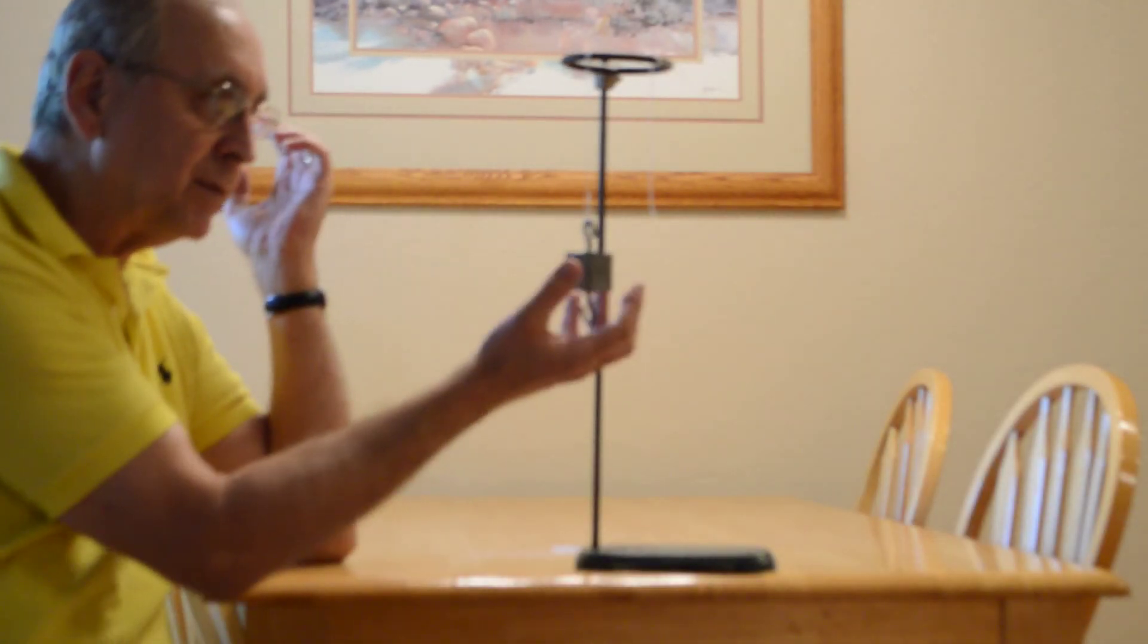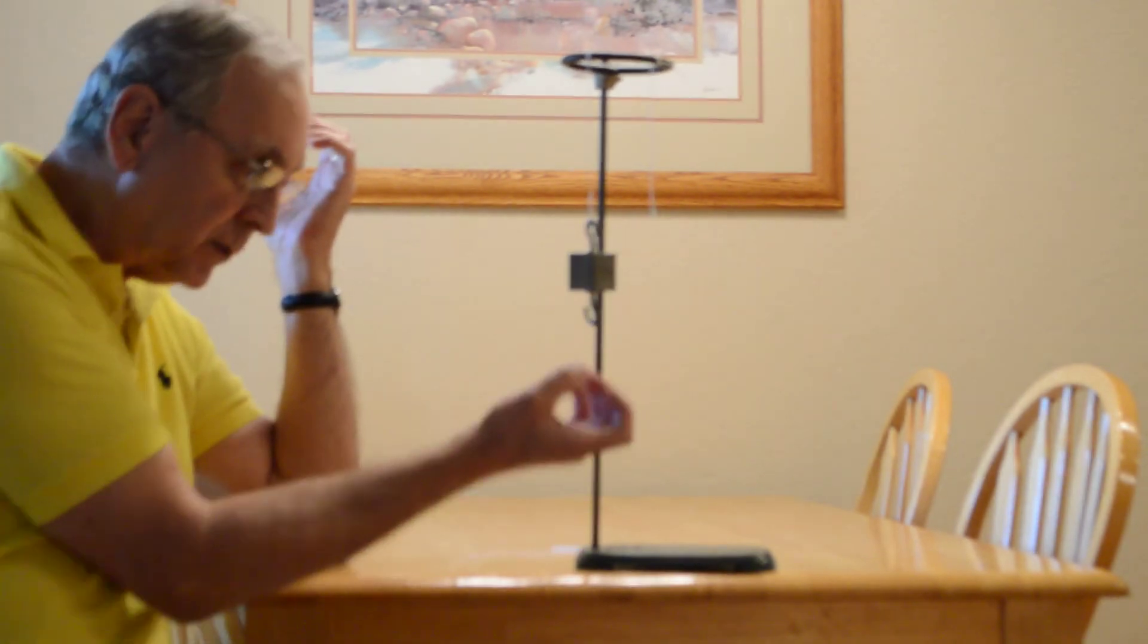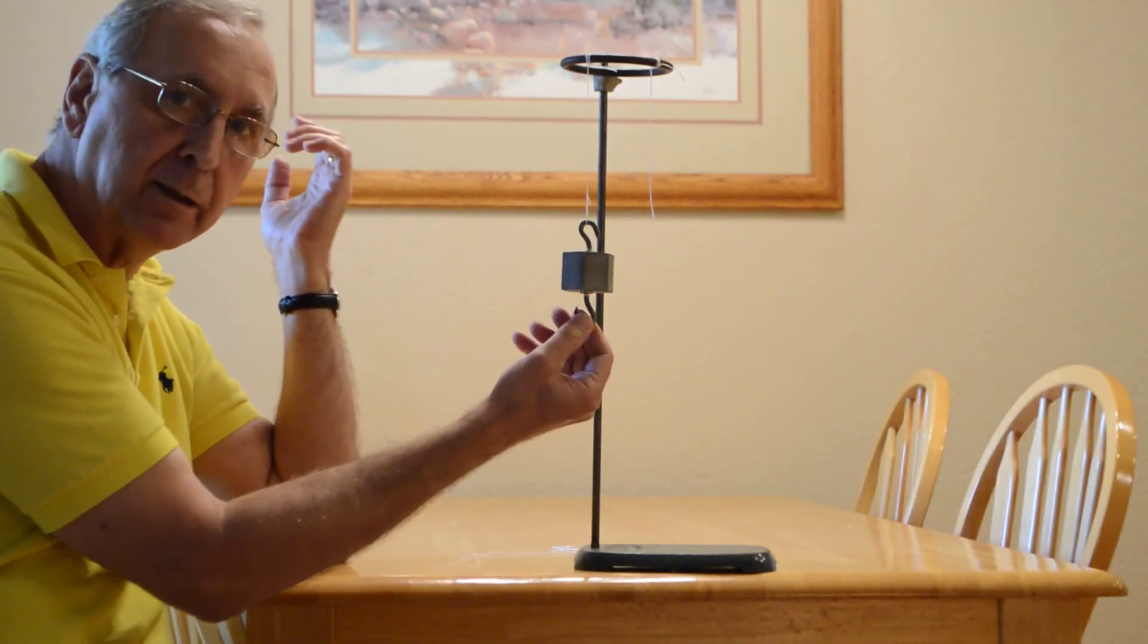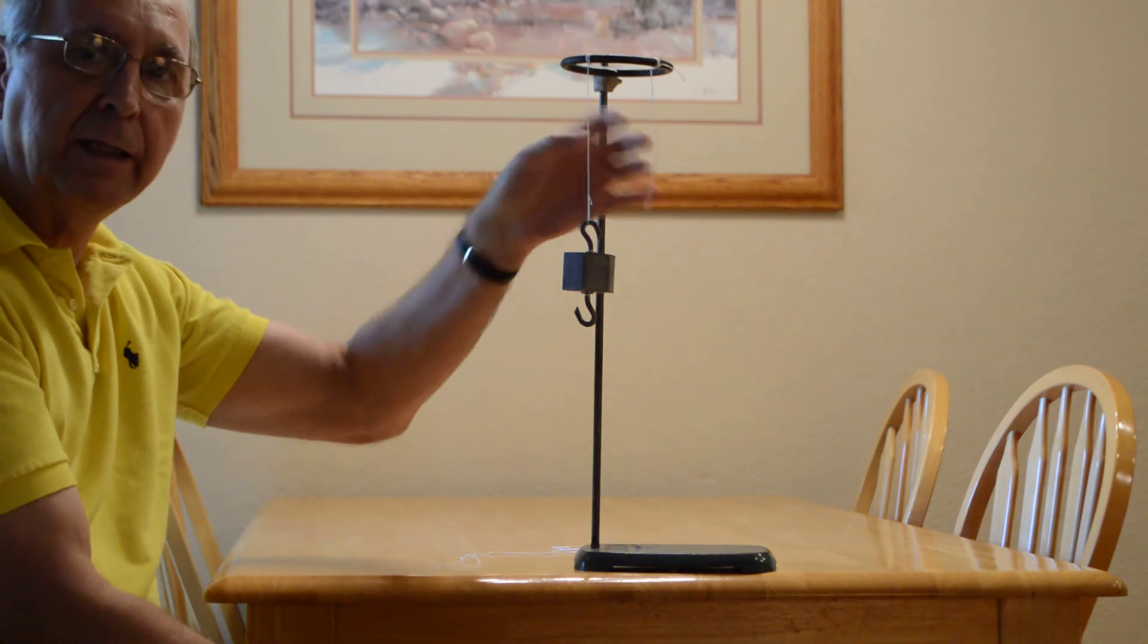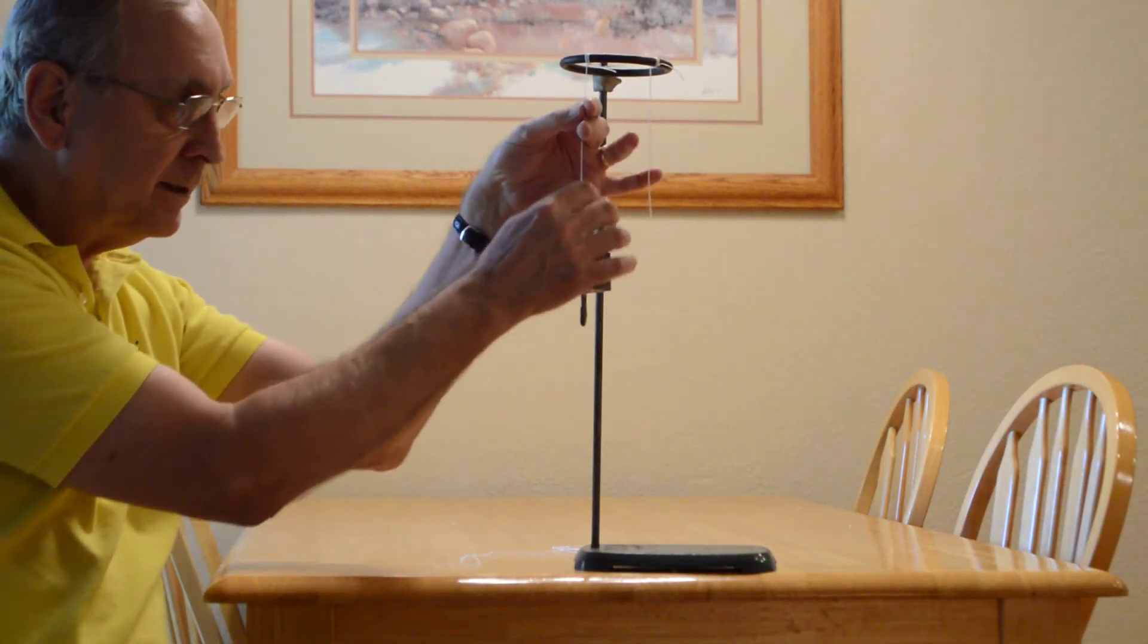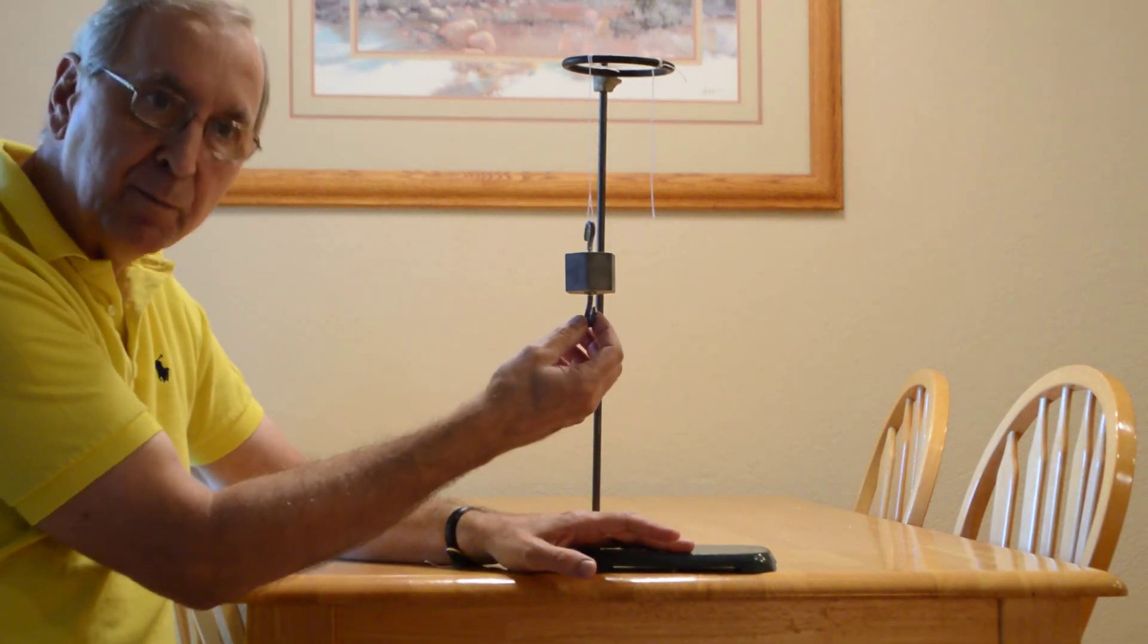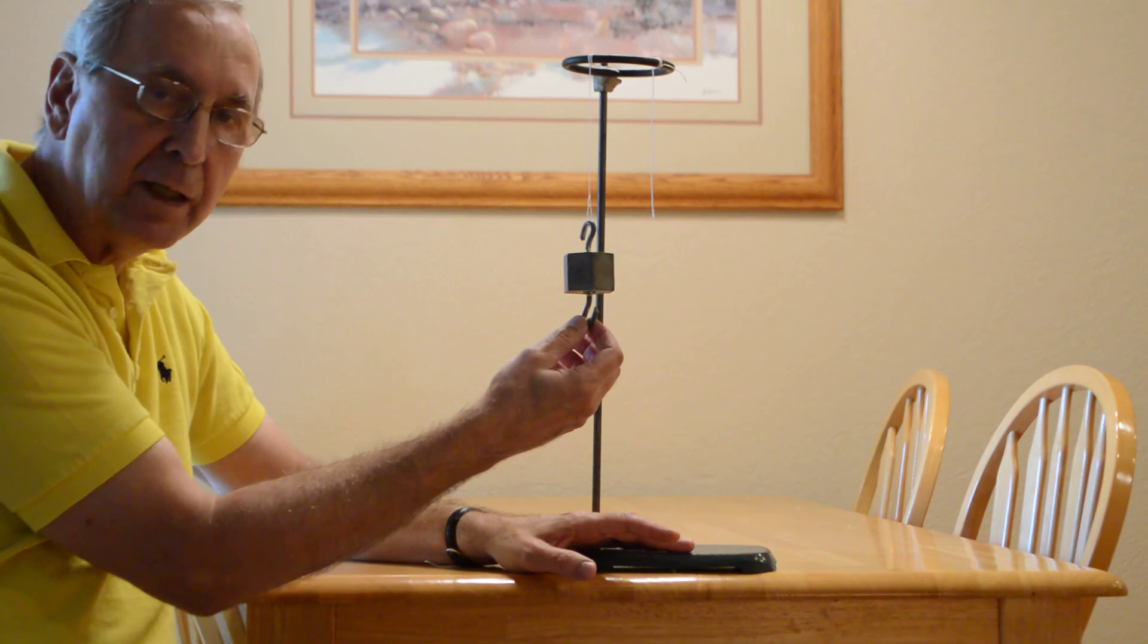But because it has a resistance to a change in motion, it doesn't want to do that. So when I pull very fast, it breaks at the bottom, and when I pull slowly, it breaks at the top. When I pull slowly, it illustrates the weight, and when I pull very quickly, it illustrates its mass, or resistance to change in motion.